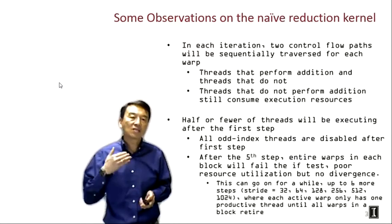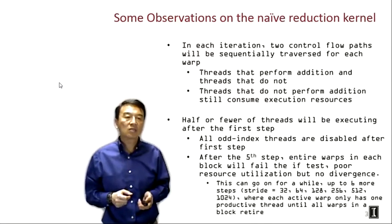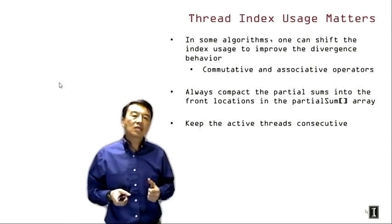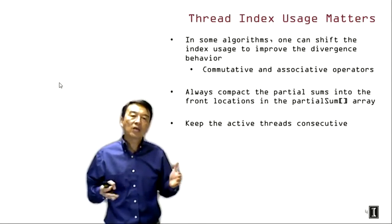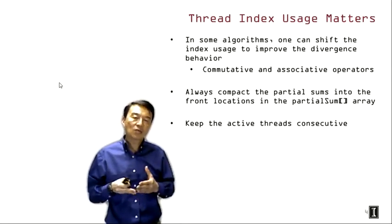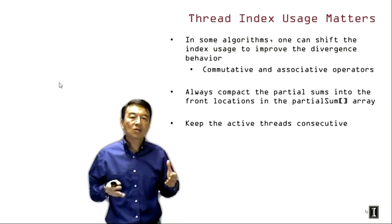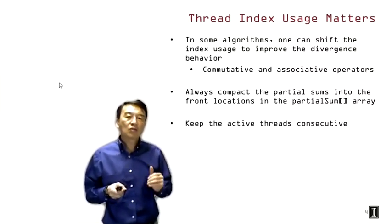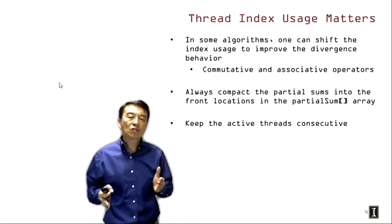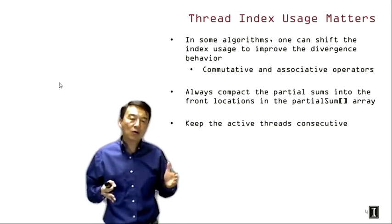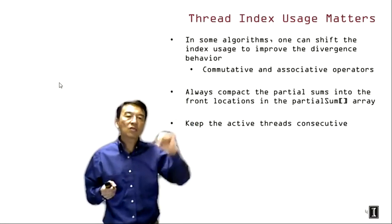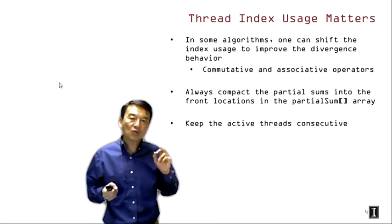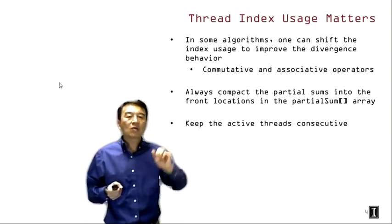The energy efficiency and performance of this algorithm is very low considering the amount of resources it uses. This brings us to the idea of readjusting the thread index-to-data mapping to improve efficiency. In some algorithms we can shift index usage to improve divergence, as long as the operations being performed are commutative and associative — which reduction automatically satisfies.